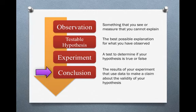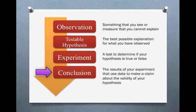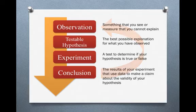The conclusion is simply the results of your experiment that use data to make a claim about the validity of your hypothesis — essentially, my hypothesis is true based on the data I've collected, or my hypothesis is false based on the data I've collected. That brings you to the end of the scientific method. Once you've done this, you should have a better understanding of the topic you're working with. But that's not the end of the science process — once you understand things better, that allows you to make new and better observations, which brings you right back to the beginning of the process.